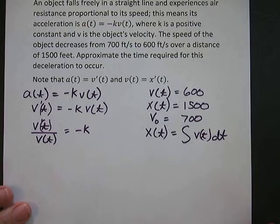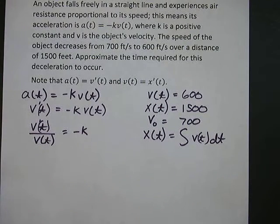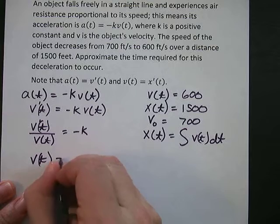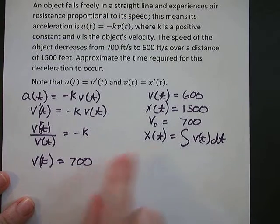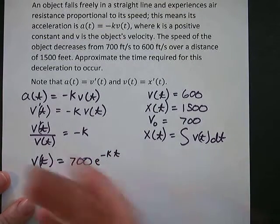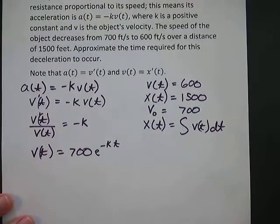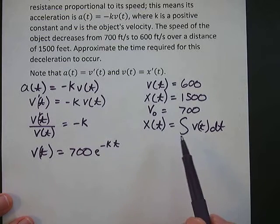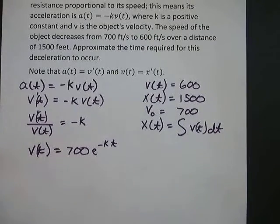We'll use the basic exponential decay form since we have negative k. So our velocity function is v(t) equals 700 times e to the negative kt, where 700 is the initial velocity. Using the fact that position equals the integral of velocity, I'm going to take the integral of this velocity function, integrating from 0 to t to find the position function x(t).